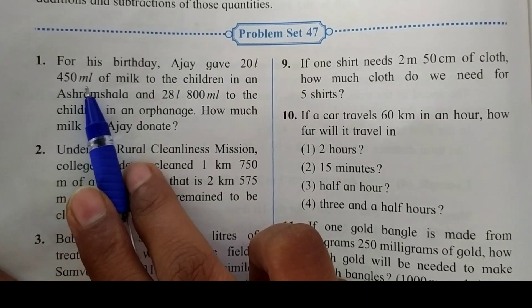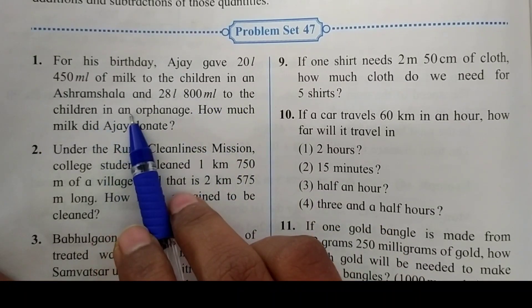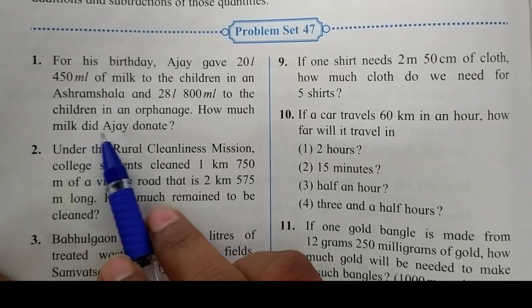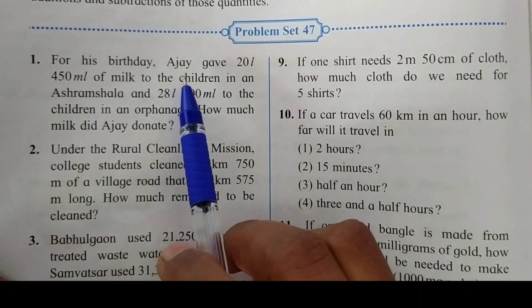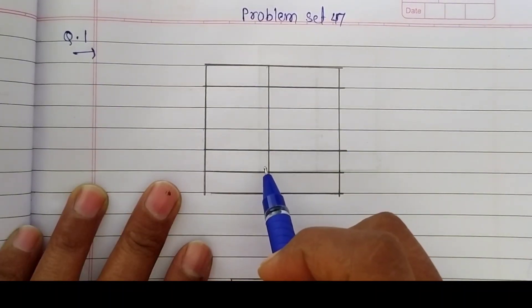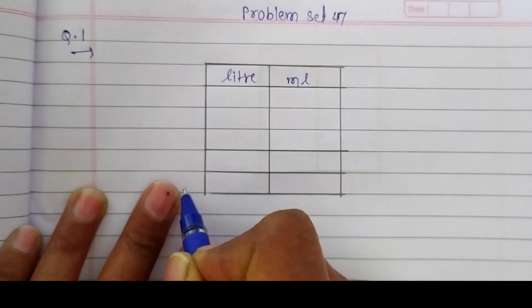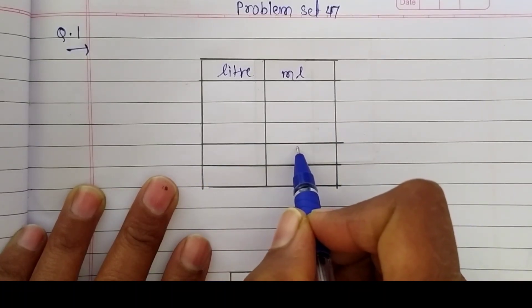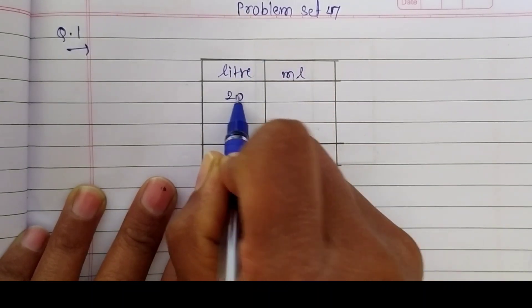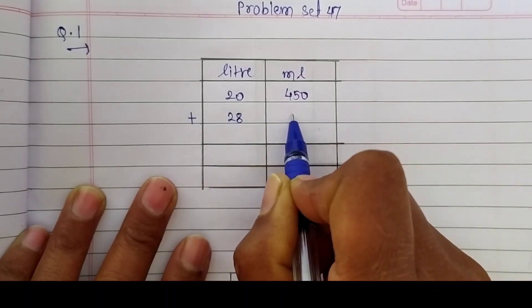The first question is: for his birthday, Ajay gave 20 liters 450 milliliters of milk to the children in an ashram shala, and 28 liters 800 milliliters to the children in an orphanage. How much milk did Ajay donate in total? To find the total donation, we have to add the milk donated to the ashram shala and the orphanage. Let's set up columns for liters and milliliters.